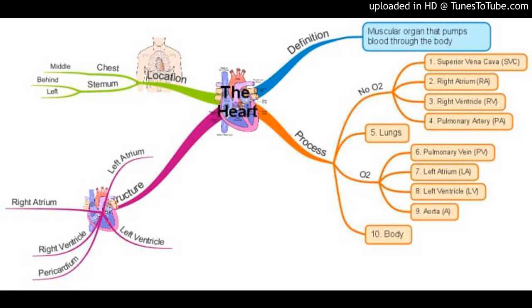After circulating through all parts of body, the deoxygenated blood enters the right atrium through the vena cava. There are two types of vena cava: upper vena cava and lower vena cava. Upper vena cava collects blood from upper body parts and lower vena cava from lower body parts.